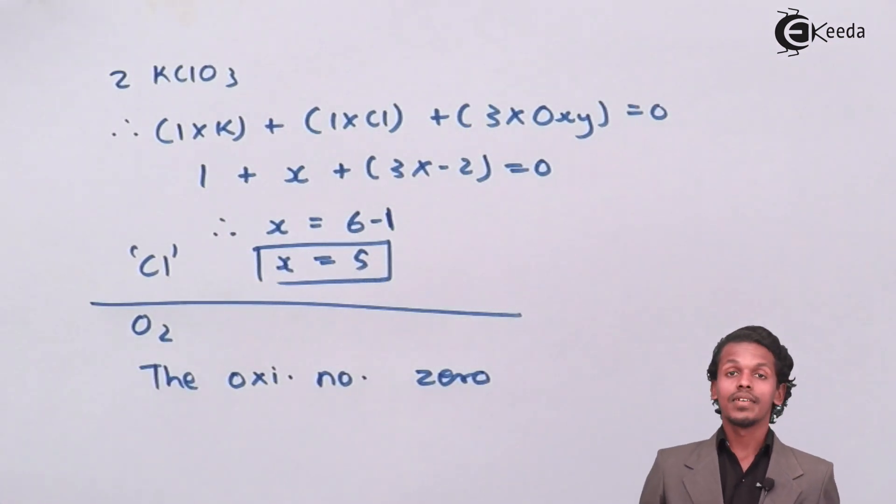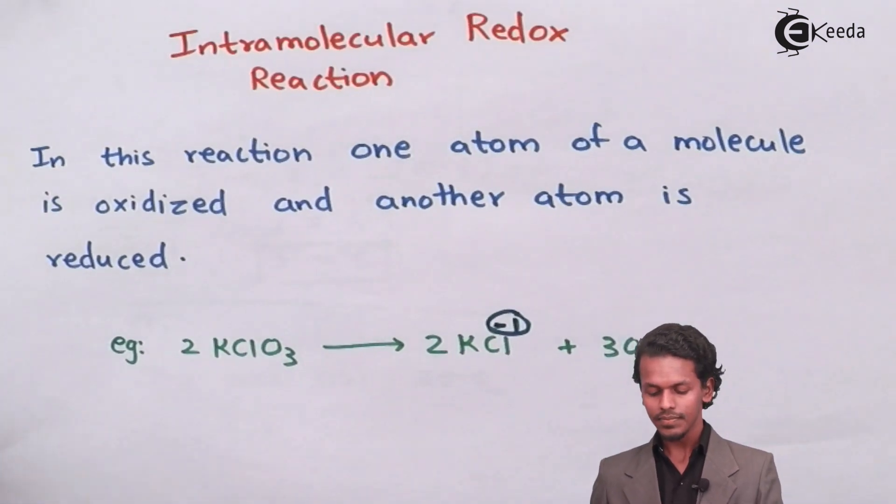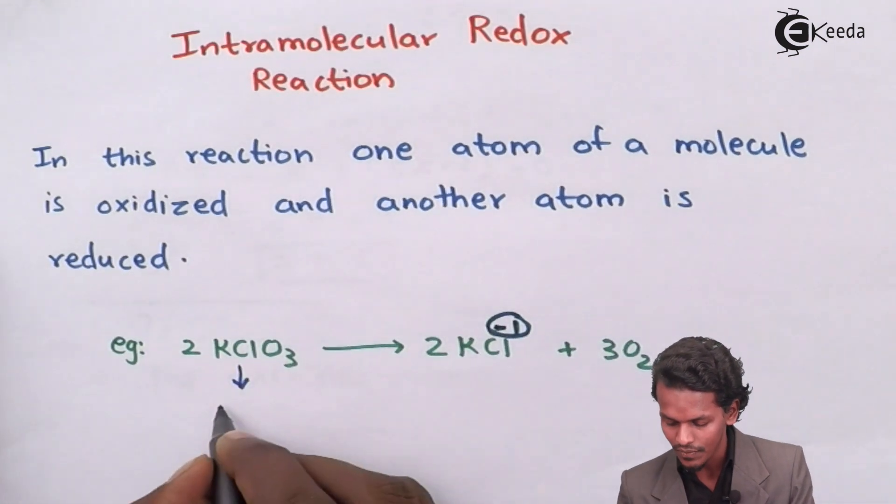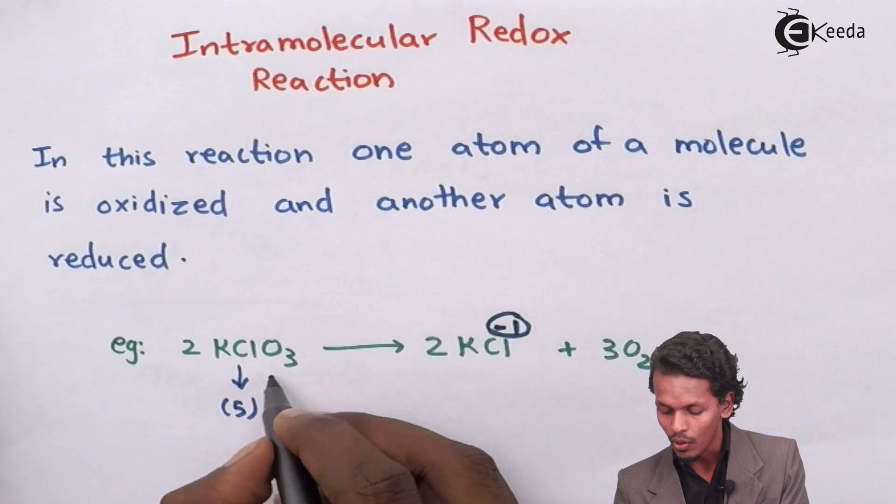So let us see what kind of reaction this is. In this case we have observed that the oxidation number of Cl is 5 in KClO3, and the oxidation number of oxygen is